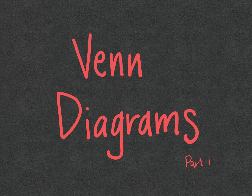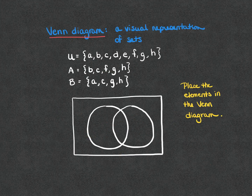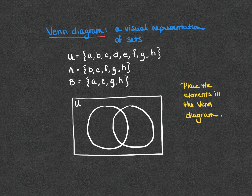In this video, we're going to begin looking at Venn diagrams. Venn diagrams are a visual representation of sets. In this slide, you can see that we have a rectangle — that is the universal set. Inside the universal set, we have two subsets, A and B. We're going to take the elements of these sets and place them in the proper place within the Venn diagram.